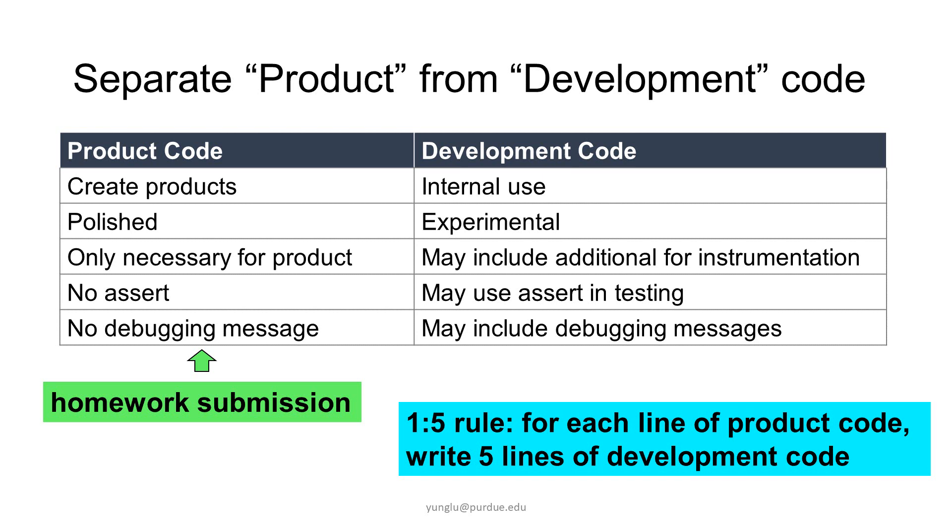If you wish, you can add debugging messages here. The key difference is that development code is for your own use. Software developers will tell you the 1 to 5 rule. For each line of product code, you need to write 5 additional lines of development code.